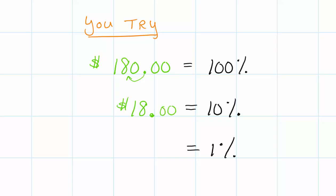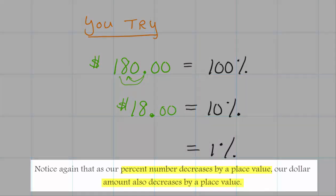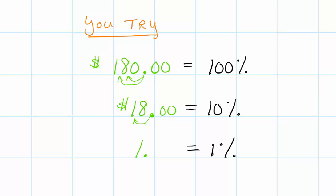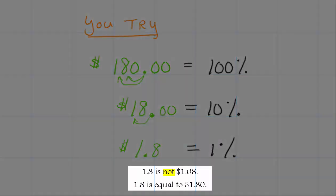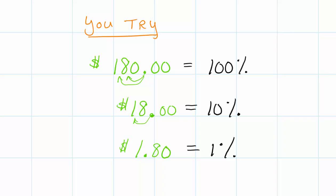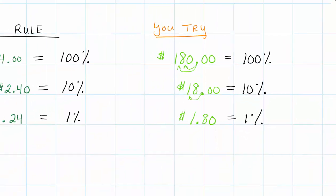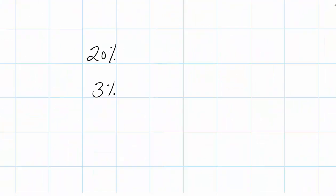To find 1%, I can go back to my original 100% number and move it two place values to the left. Or I can go off of 10% and just move it one place value to the left. And that's going to give me $1.80. It looks like 1.8, but we've got to keep it in the form of money. So 1.8 in terms of money is $1.80. Make up any number that you want. You can go ahead and find 10% with no problem.